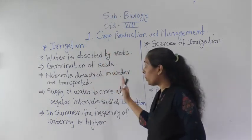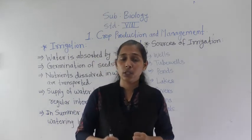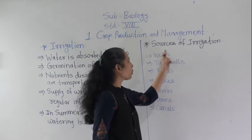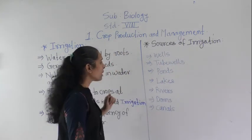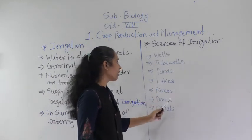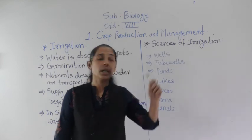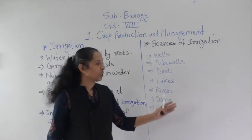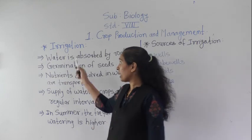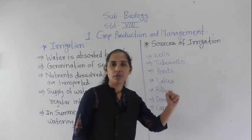So this is all about irrigation. But from where do we get this water? What are the sources of water used for irrigation? The sources of irrigation include wells, tube wells, ponds, lakes, rivers, dams, and canals. All these are sources of irrigation, and farmers use water from any one of these to irrigate their crops. Today we discussed irrigation, its importance, and the sources of irrigation.